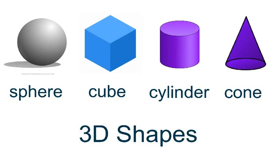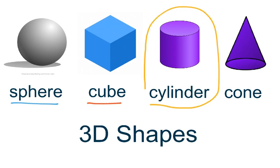Hi everyone, this is Ms. Torres, and today we are going to do lesson 10.4 of GoMath, which is identifying, naming, and describing cylinders. We have already learned about the sphere and the cube, and today we are learning about a cylinder, a part of our four 3D shapes we will be learning in this chapter.